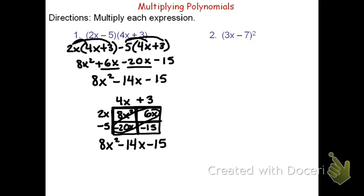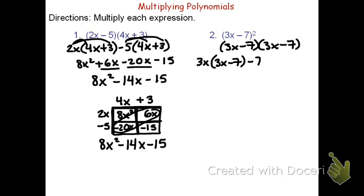The second problem is the quantity 3x minus 7, squared. Think about it for a moment — what would that look like? How can I rewrite it? Anything squared means the number is multiplied by itself. So in this case, we have the quantity 3x minus 7 times another quantity 3x minus 7. We can now do this with repeated distribution: 3x times the quantity 3x minus 7, minus 7 times the quantity 3x minus 7.